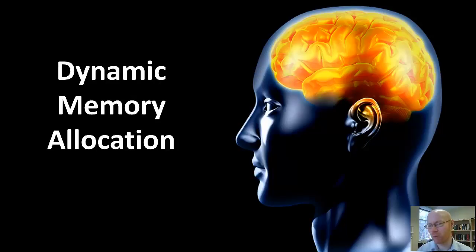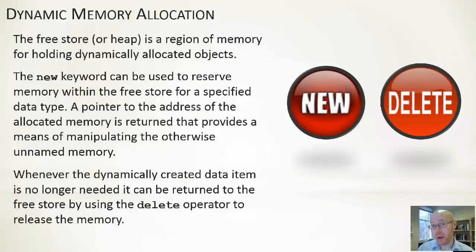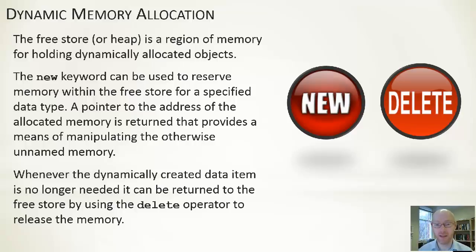We're talking here about dynamic allocation, not about local variables and things like that. We are talking about data that we want to create that will persist for a while and we'll be able to use it to one end or another. The heap is where this data notionally will live. The new keyword is the way whereby we will be able to allocate it, and alongside that we also have the delete keyword, which gives us the ability to free things up whenever we've decided we don't need to use it anymore, so it's available again to our program.